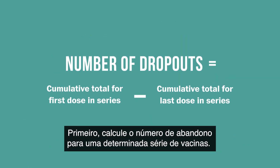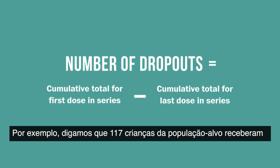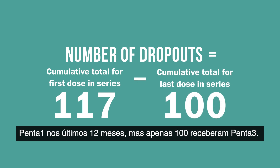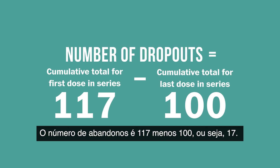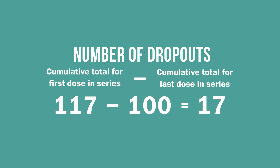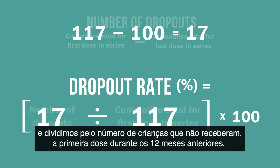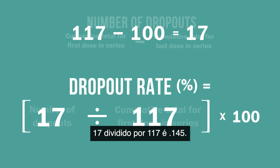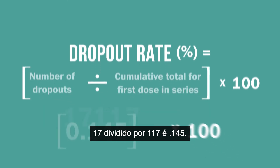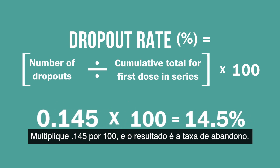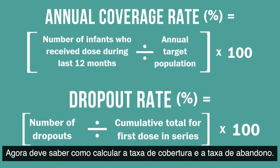First, calculate the number of dropouts for a particular vaccine series. For example, let us say that 117 infants in the target population received pentavalent 1 over the past 12 months, but only 100 received pentavalent 3. The number of dropouts is 117 minus 100, or 17. Now we take the number of dropouts, 17, and divide it by the number of infants who did receive the first dose over the previous 12 months. 17 divided by 117 is 0.145. Multiply 0.145 by 100 and the result is the dropout rate.